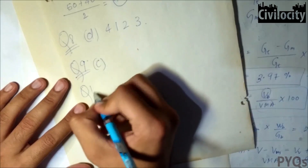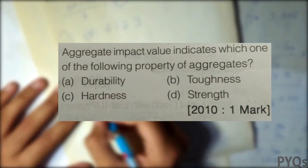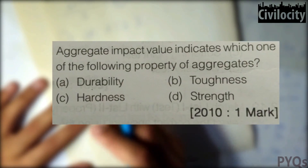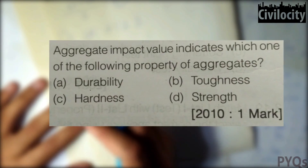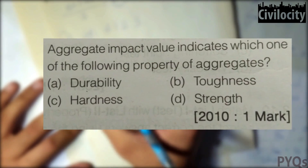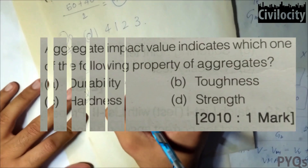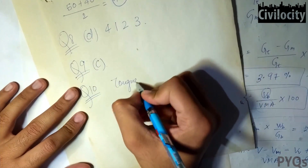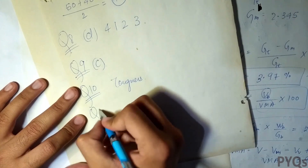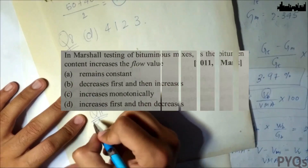Question ten: the aggregate impact value indicates toughness. Impact is directly related to toughness.